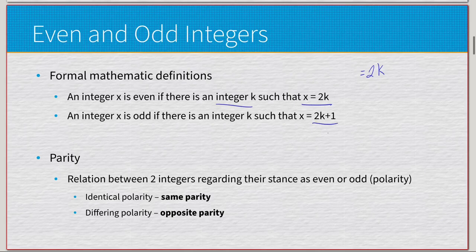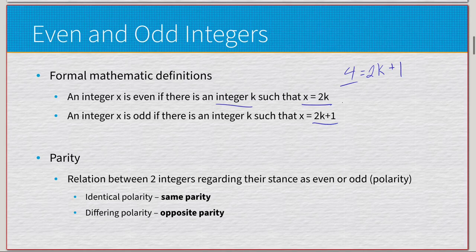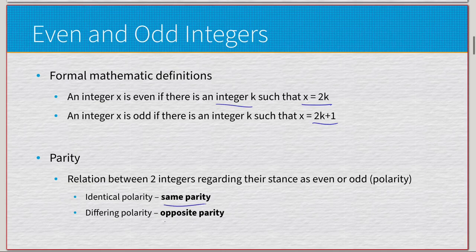Moving on to odd integers, the form is 2k + 1. If we try to plug in 4: with k = 1 we get 3, and with k = 2 we get 5. So both 3 and 5 are odd, but 4 is not odd because it would break the definition. We also have the idea of parity — two integers regarding whether they are even or odd. Identical parity means both even or both odd; differing parity means one is even and one is odd.